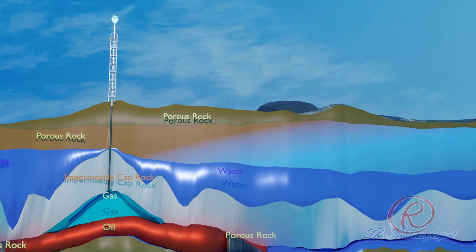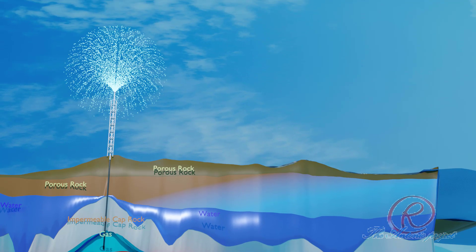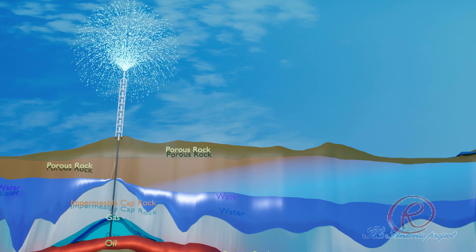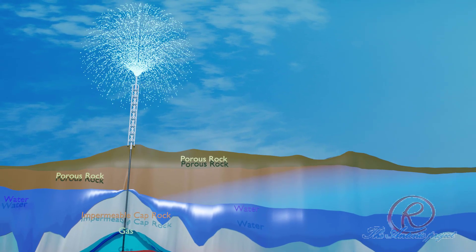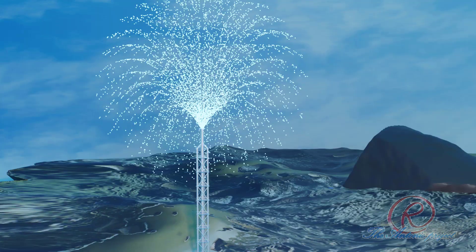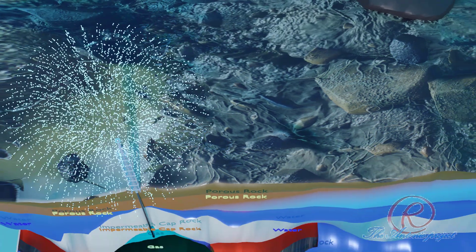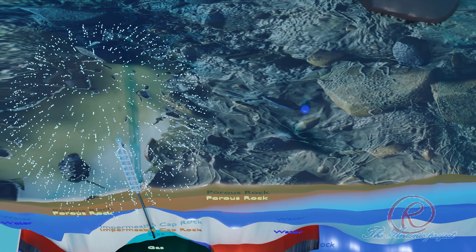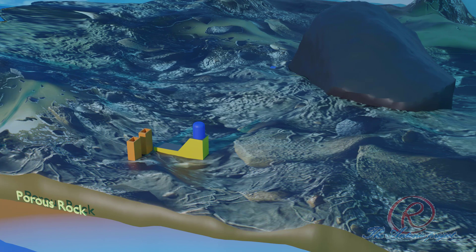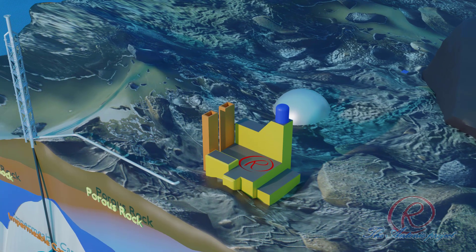Surveys are used to find the right places to drill natural gas and oil wells, and an exploratory well is drilled and tested. When results from a test well show that a geologic formation has enough natural gas to be profitable, one or more production wells are drilled. Natural gas wells can be drilled vertically and horizontally to reach natural gas formations.